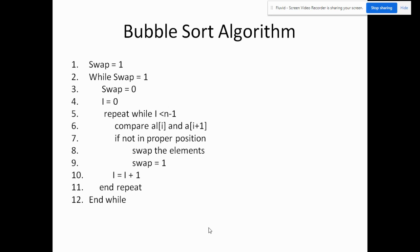Here is the algorithm. We have a flag: swap is equal to 1. Then while swap is equal to 1 — meaning while there is swapping — we'll be repeating everything inside, from steps 3 to 11. We reset swap to 0, then a counter i equals 0. Repeat while i is less than n minus 1. We compare the two adjacent elements, and if they are not in the proper position we swap them and set the flag back to 1. Then go to the next element, repeating until the last comparison. Every time swapping is done this loop will be repeated until swap is no longer equal to 1.